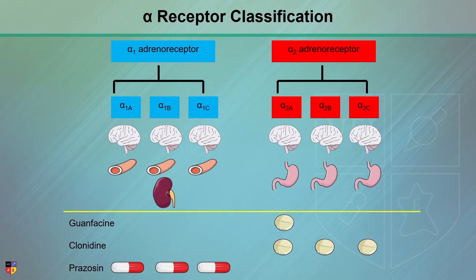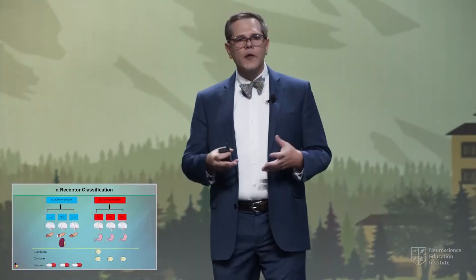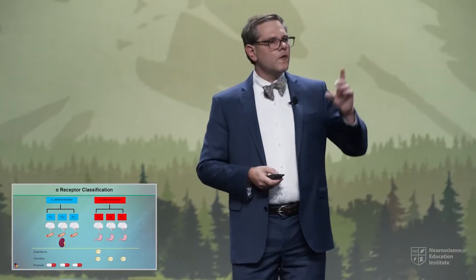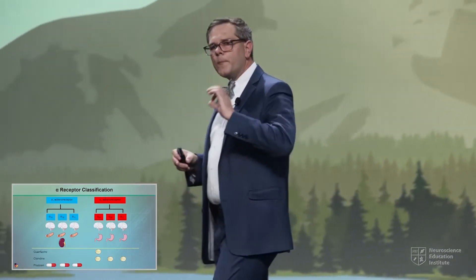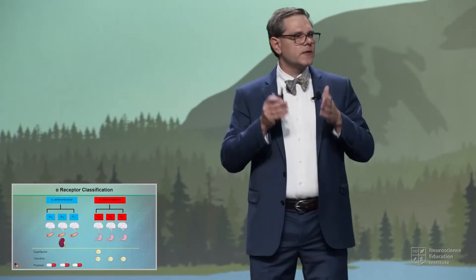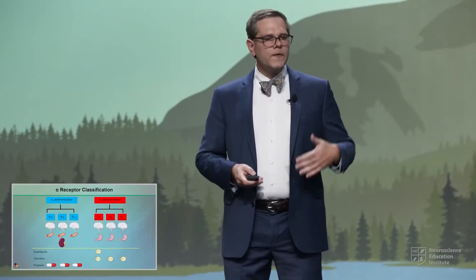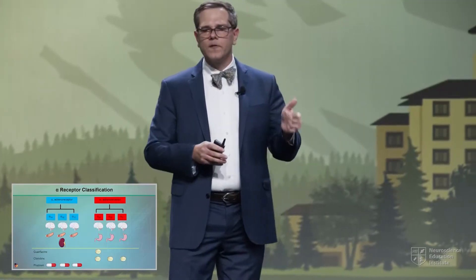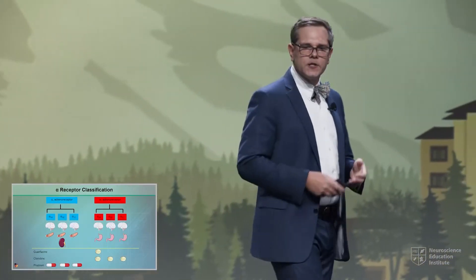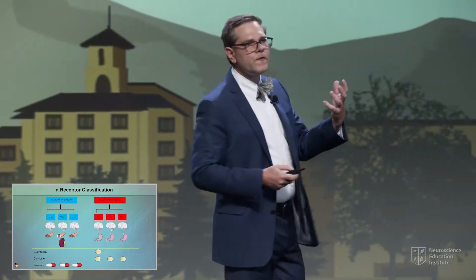The drugs that act on this system are primarily guanfacine and clonidine, although we have other forms like dexmedetomidine and others. Guanfacine has FDA approval for the treatment of ADHD, just like clonidine, but they're associated with a different tolerability profile — in part related to differences in receptor pharmacology. With guanfacine, where we're primarily affecting alpha-2a, we tend to see a lot less sedation than with clonidine, which affects alpha-2a, 2b, and 2c. With alpha-2a, we get a bit more of a prefrontal effect.